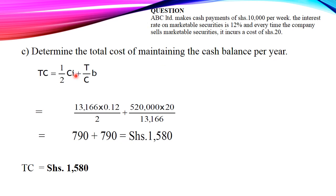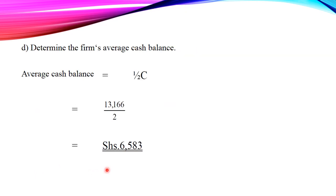Part C requires us to determine the total cost of maintaining the cash balance per year. The total cost formula is TC = (1/2)CI + (T/C)B. We have C = 13,166; I = 0.12; T = 520,000; and B = 20. Substituting these values gives a total cost of shillings 1,580.